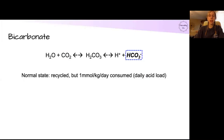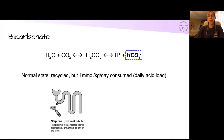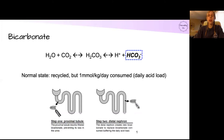Speaking of bicarbonate, quick little refresher. This is the chemical equation that bicarbonate undergoes in our body. In the normal state, bicarbonate is really important, so it's recycled. But we have to remember that one millimole per kg per day is consumed to buffer that daily acid load. How do we recycle it? The kidneys, of course. Pretty much all of the bicarbonate filtered into a healthy nephron is reabsorbed in the proximal tubule. Then in the distal nephron, new bicarbonate is produced to replace what was consumed buffering that daily acid load. See our follow-up video on renal tubular acidosis for more on these concepts.